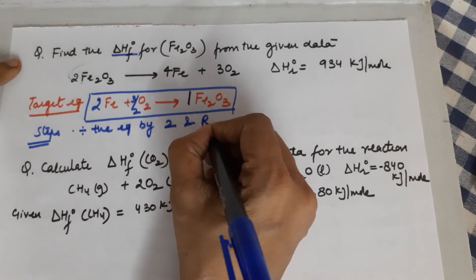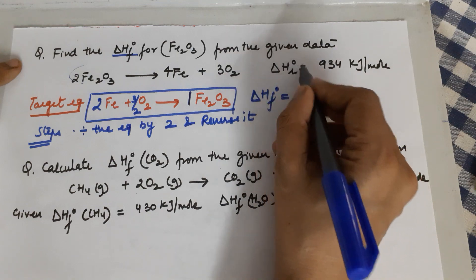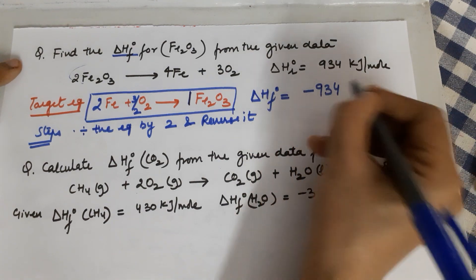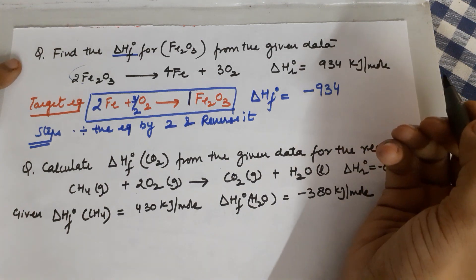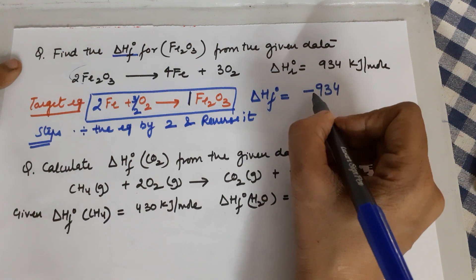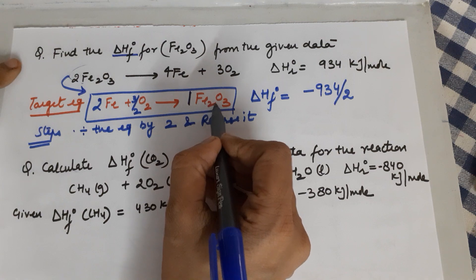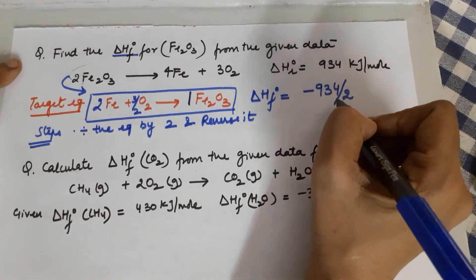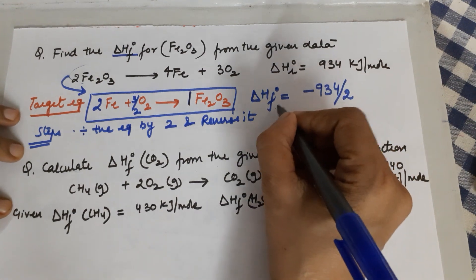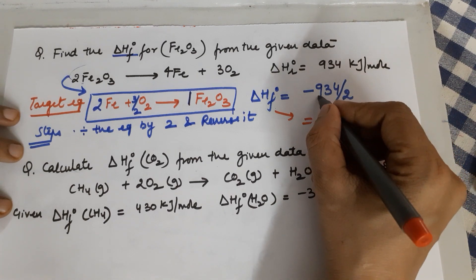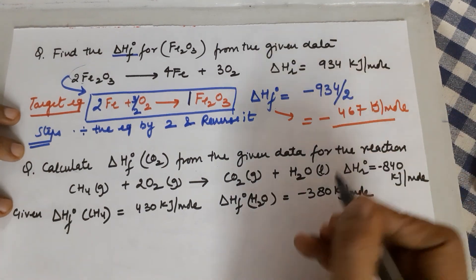The given equation has Fe₂O₃ appearing twice, but I need it once, so I divide the equation by 2. I also need to reverse it, placing Fe₂O₃ on the right-hand side. When a thermochemical equation is reversed, the sign of the enthalpy changes to negative. Since I reverse it, the value becomes negative, and since I divide by 2, I divide the enthalpy by 2 as well. Dividing 934 by 2 gives 467, so the enthalpy of formation of Fe₂O₃ is −467 kJ/mol.